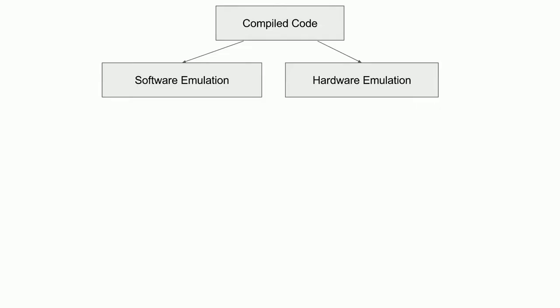We should look at some of the pros and cons of both methods of emulation. For software, it is often cheaper, meaning that the only cost is having a computer which can run the software, which most people have. It's often much easier to write a software emulator. Software emulators are more portable, meaning they can run on many different systems. However, they can be slower at runtime, because the computer running it has extra work to do, such as interpreting the instructions and executing them. Additionally, software emulators can become very complicated in an effort to mitigate the slow runtime problem.